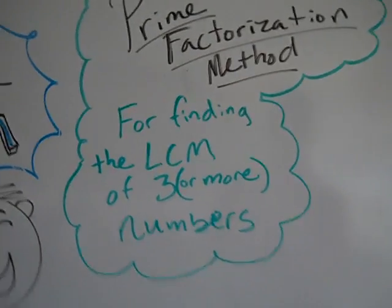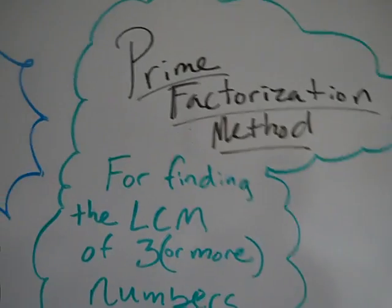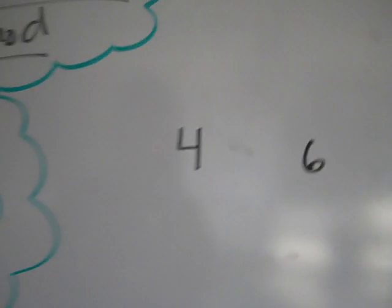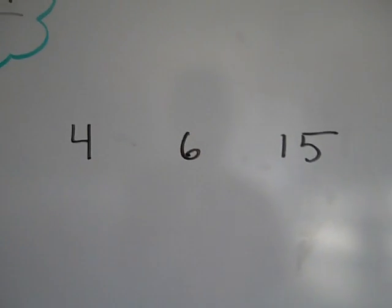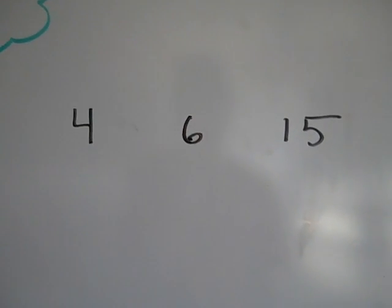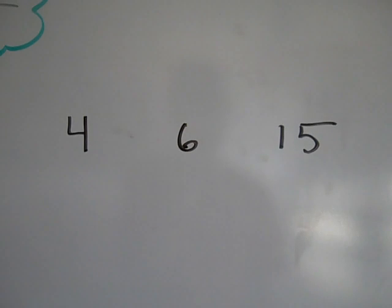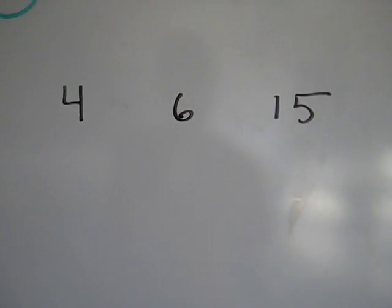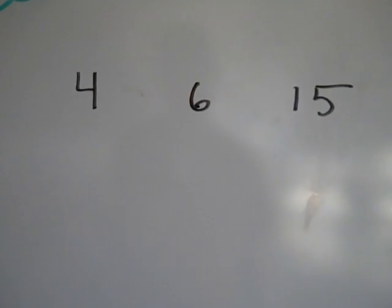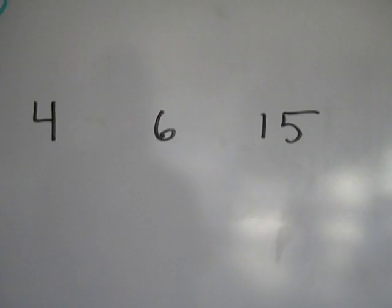Remember: three to the tree — because when we're doing prime factorization we're going to be doing factor trees to find the prime factorizations of three numbers. Here I have the numbers 4, 6, and 15. I'm looking for the lowest common multiple of all three, so I'm going to find the prime factorization of each one.